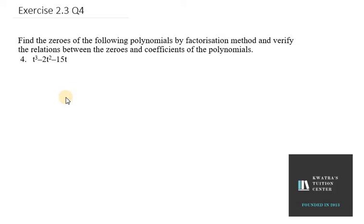Now in this case you can see the highest degree is 3. So if highest degree is 3 that means it is a cubic type of polynomial. So F(t) equals t cubed minus 2t squared minus 15t. So this is the type of cubic polynomial we have here.